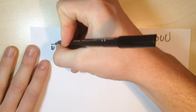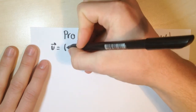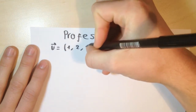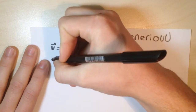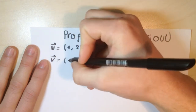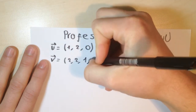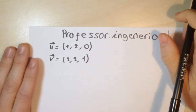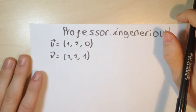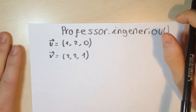For example, they give me vector U: it's (1, 2, 0). And they give me V: it's (2, 2, 1). You need to know that cross product is only for three-dimensional vectors — for the Euclidean space.